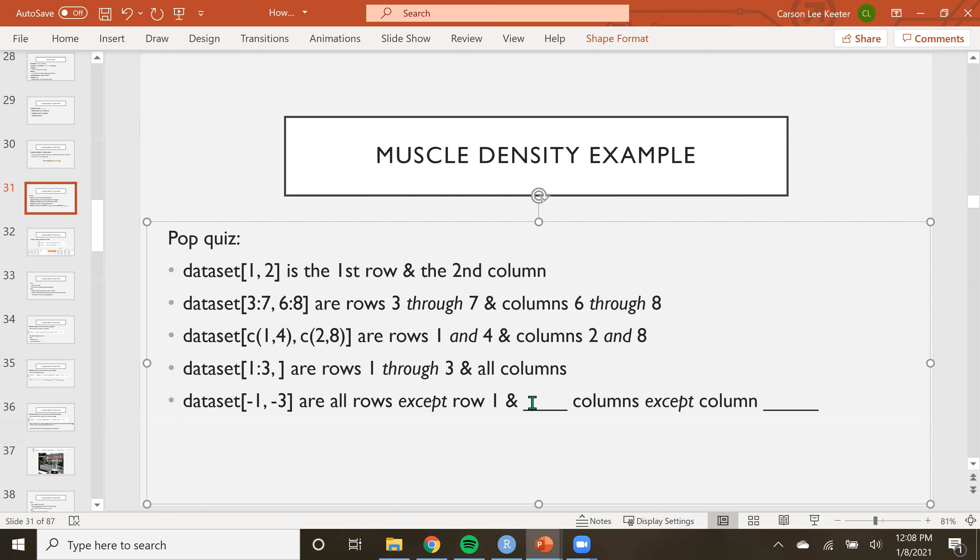And we want all of the columns except column three, right? So if we want to specify the fact that we don't want these two things, we just put a negative sign in front of it.